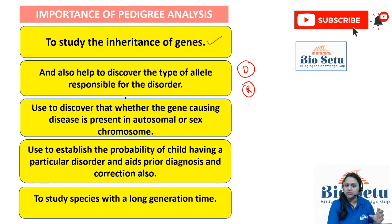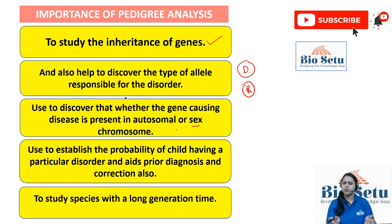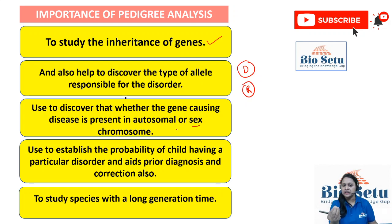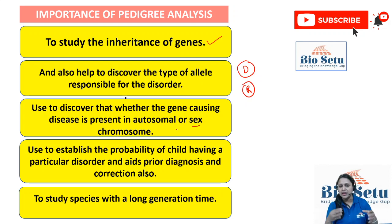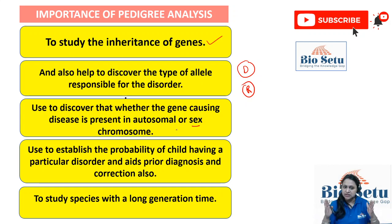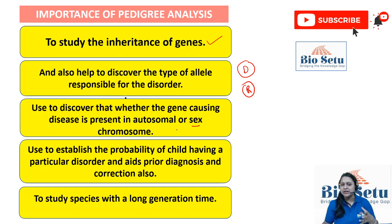After determining dominant or recessive, pedigree is also used to discover whether the gene causing the disease is linked to an autosomal chromosome or a sex chromosome. Because pedigree provides very sorted information, our next target is to know where the gene is present. The advantage is that autosomal and sex chromosomes have different inheritance patterns, so knowing where the gene is present tells us the inheritance pattern again.